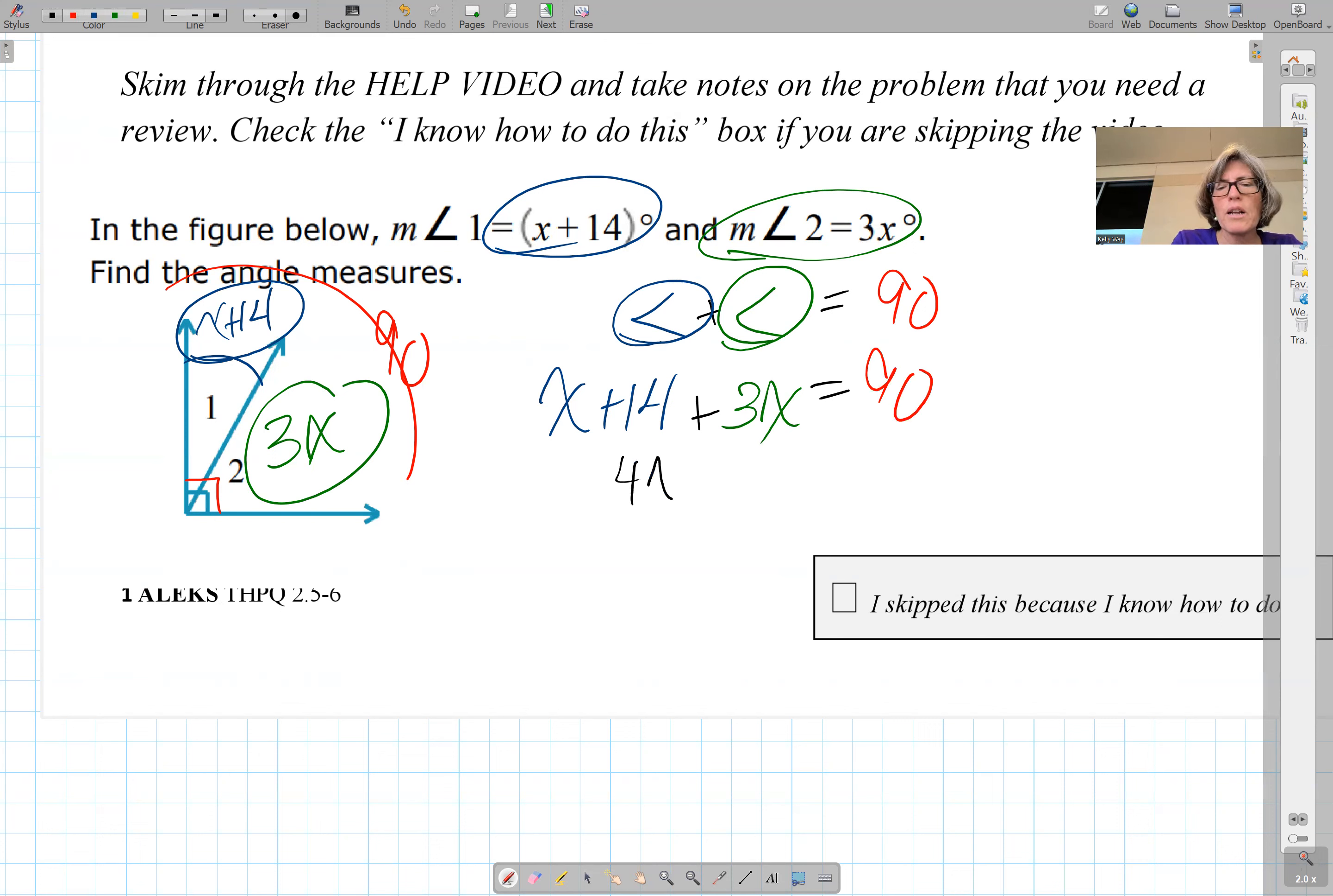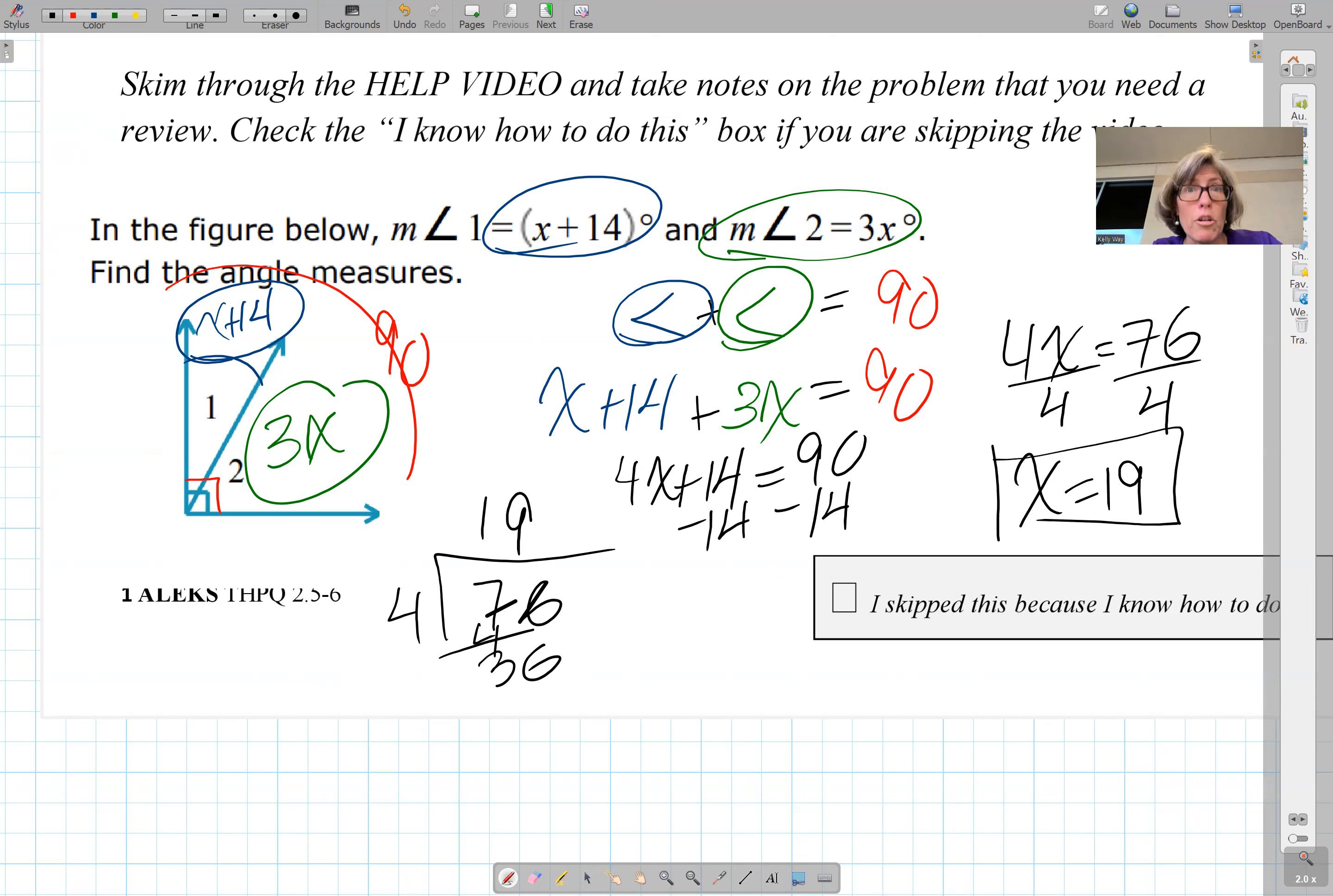You solve, 4x plus 14 equals 90 minus 14. 4x equals 76 divided by 4, and we have 76 divided by 4, 4 goes into 36 nine times. So x equals 19.